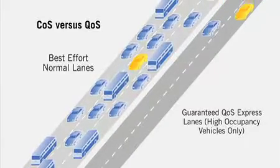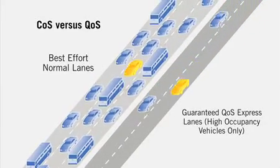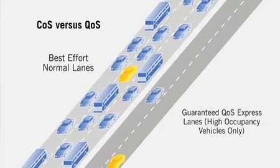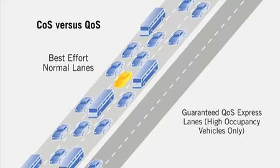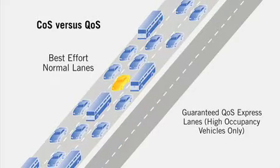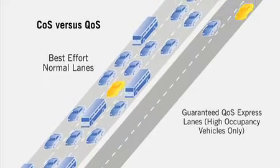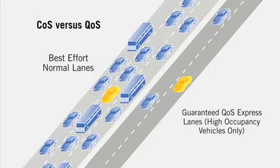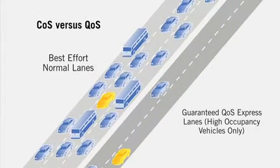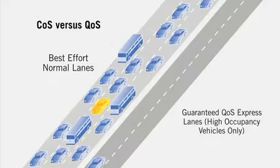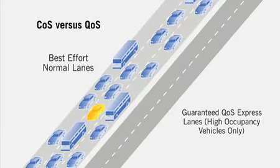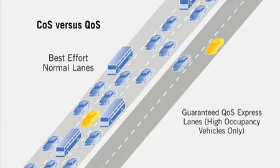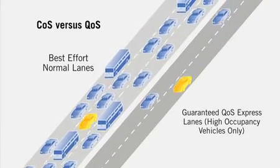Quality of service is really more deterministic — making sure that a certain traffic flow gets end-to-end across the network. The example here would be a highway model: on the left-hand side is class-of-service-based traffic, where gold would normally get through on the highway unless there's a lot of congestion, as opposed to a guaranteed QoS environment where it's like the HOV lane, which is reserved for you so that even during peak times, traffic is guaranteed to get through.